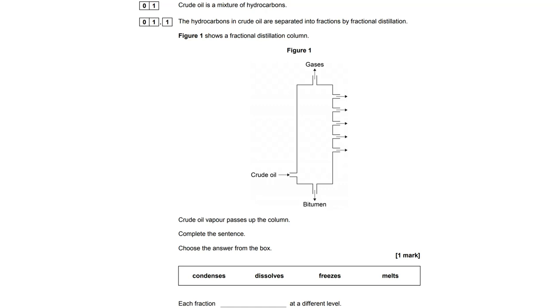Crude oil vapour passes up the column and then each fraction will do what at a different level? Well, distillation is easier to think of as an evaporation followed by a condensation.